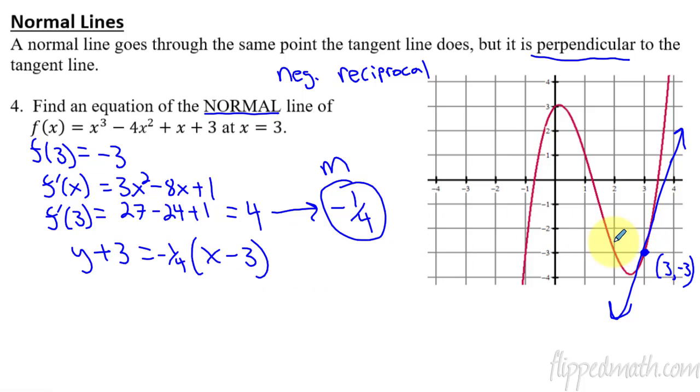So I could go up 1 this way, over 4, 1, 2, 3, 4, up 1 over 1, 1, 2, 3, off the grid here, and hard to do this with my pen, but it looks something like that. There's the perpendicular line. It would form a 90 degree angle. That's the normal line. So now in this lesson, you're going to be doing both the tangent lines and the normal lines for the practice of both of them.